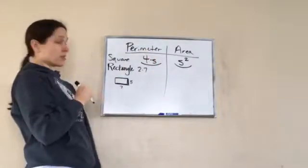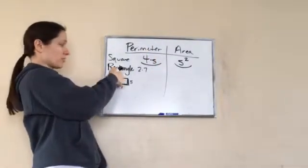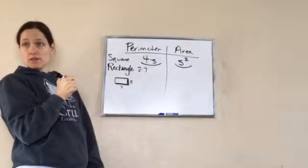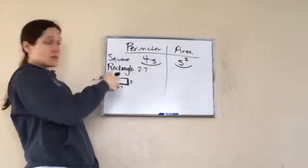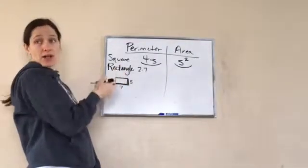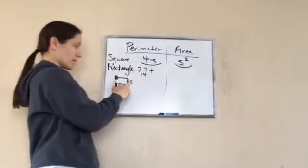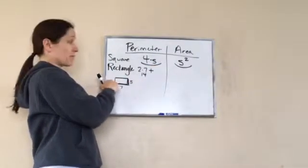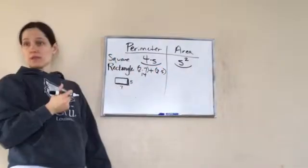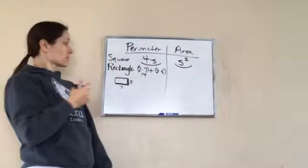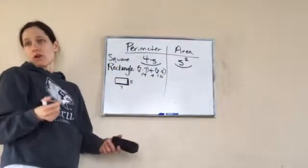Two times seven. Would it be fair for me to do two times seven? Yeah. To get what? Two. To get the total of those two sides, right? And then, so that's what? Fourteen plus five. Would I be able to do two times five? Yeah. Which would be? Which would be ten. And so, fourteen plus ten is? Twenty. Twenty-four.